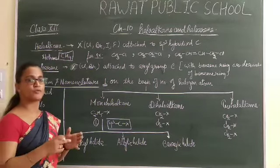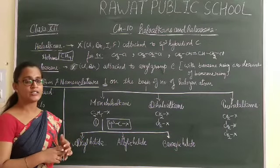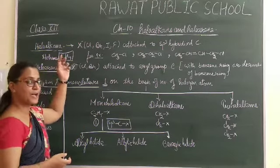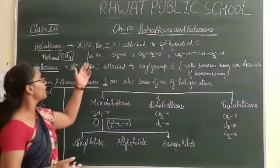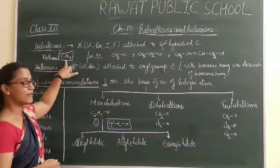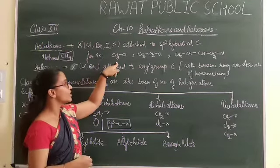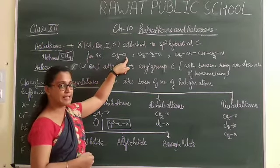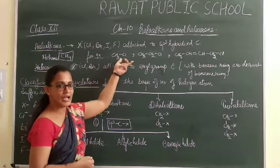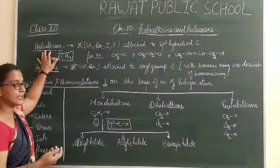What are the halogen groups? We know that chlorine, bromine, and iodine are the halogen groups. So when one of the hydrogen atoms is replaced by any halogen group, it will be converted into a Haloalkane. For example, when methane has one hydrogen removed and one chlorine group added instead, it is converted into CH3Cl, and we call this chloromethane.